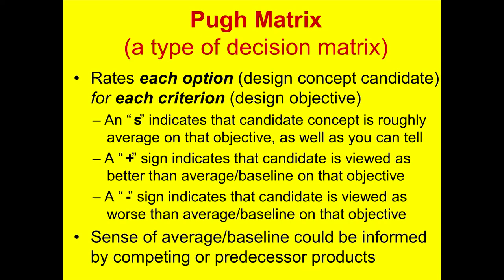A common approach is to use a kind of decision matrix called a Pugh matrix, or Pugh chart. This generally rates each option — in this case, each option would be one of your design candidates — with a plus, a minus, or an S for each criterion.